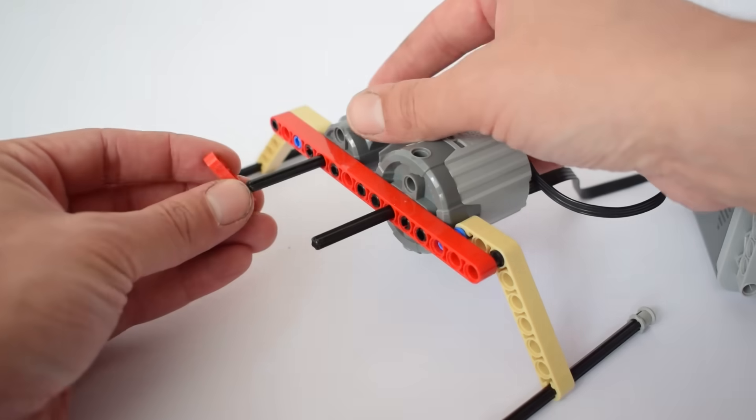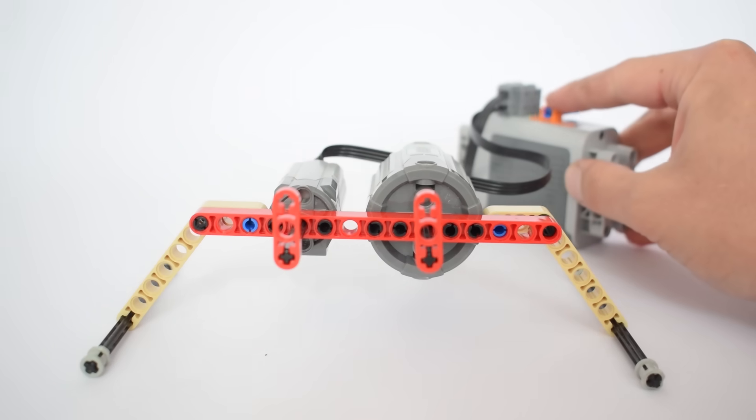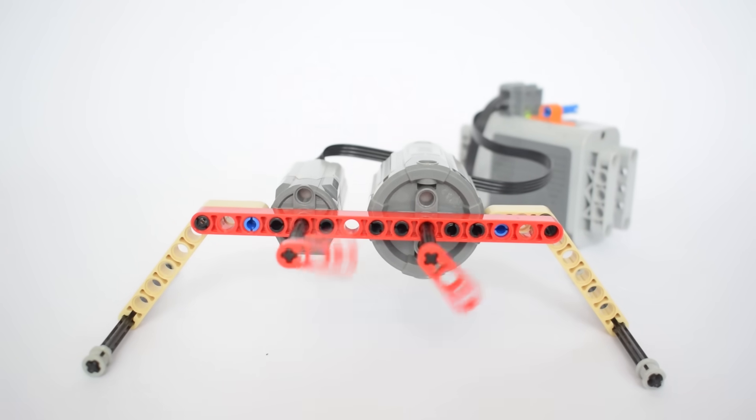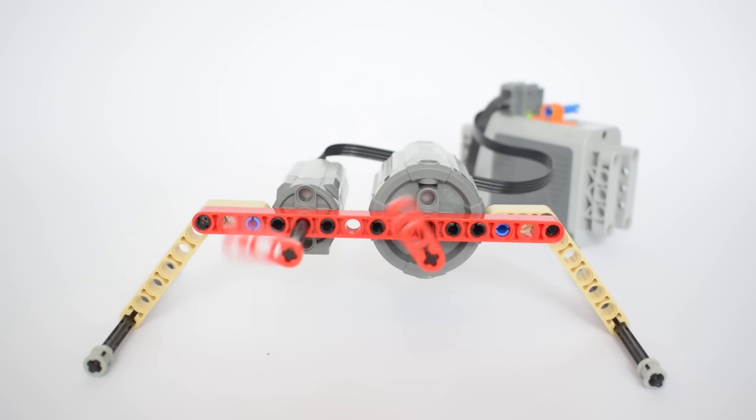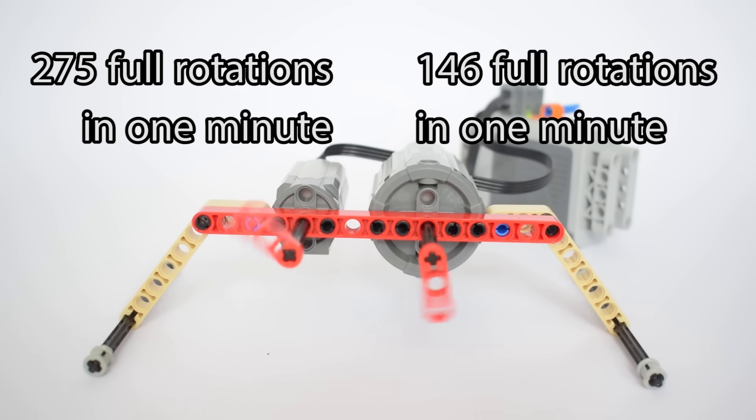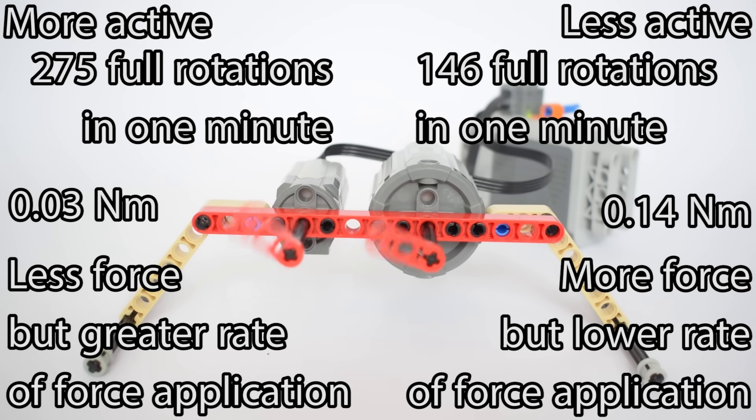Now we're going to attach these two blocks onto the shafts of our Lego motors so that we can more easily observe how fast each of them rotates. As you can see, the small motor actually rotates noticeably faster than the large motor. In fact, over a period of one minute, the small motor makes 275 full rotations while the large motor makes only 146 rotations. This means that although it can't generate as much torque as the large motor, the small motor applies its torque at a greater rate over the same period of time. In other words, it outputs its rotational force more frequently. It's more active than the large motor.